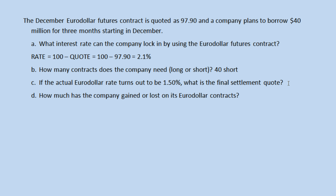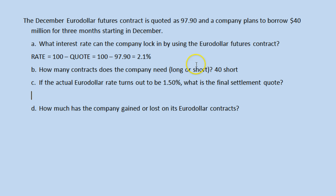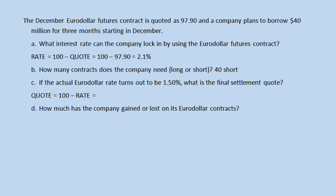Next, if the actual Euro-dollar rate turns out to be 1.5 percent, what is the final settlement quote? We can rearrange the equation — you get the quote by taking 100 and subtracting the rate expressed as a whole percent. So 100 minus 1.5 equals 98.50.